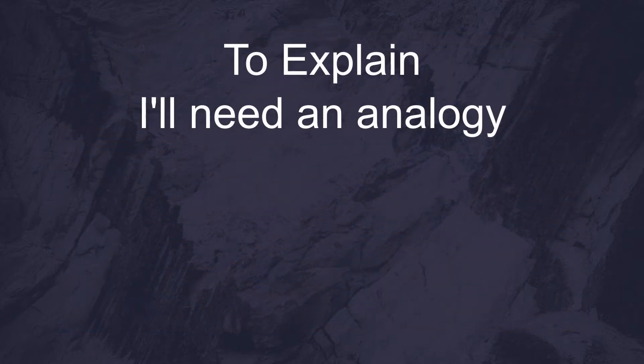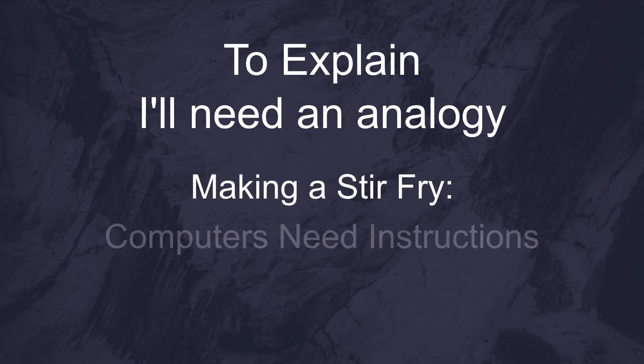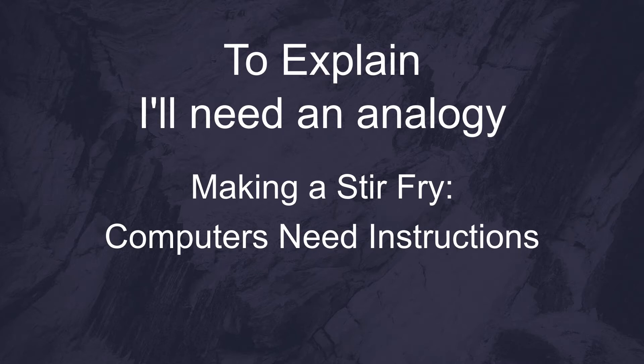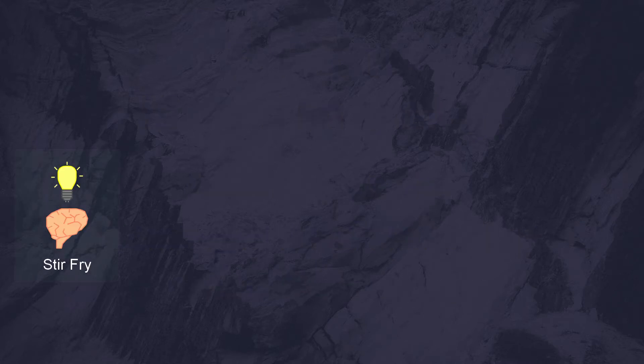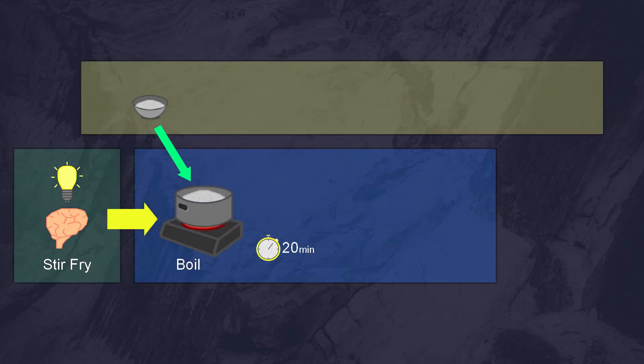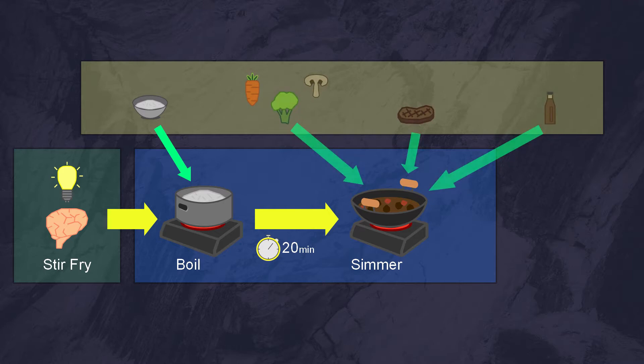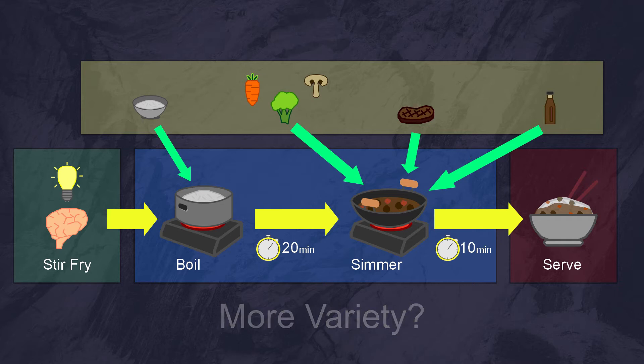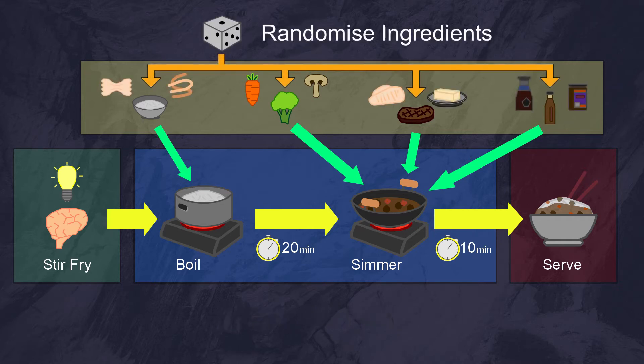To help explain this system, I'm going to start by comparing music making to cooking. If you think about making a stir fry, you rarely think in terms of computer instructions. You probably think in much more vague terms. For example, I will make a stir fry. I will boil the rice for 20 minutes. I will simmer the vegetables, proteins, and sauce for 10 minutes, and serve. And if we wanted to create more variety, we can choose from a random selection of ingredients. So how do we get all of this to make sense to a computer?